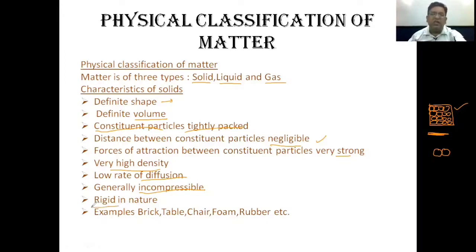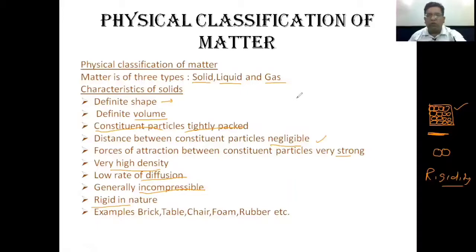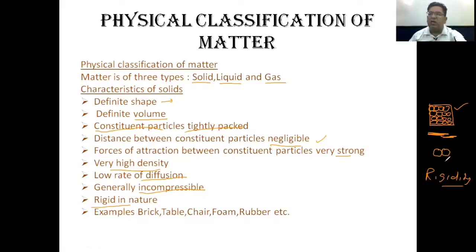Solids are rigid in nature. Rigidity means the constituent particles occupy fixed positions and cannot move; they can only oscillate about their mean positions. Since solid particles are closely packed, they cannot move from one place to another. That's why solids are rigid in nature. Examples of solids: brick, table, chair, foam, rubber, etc.